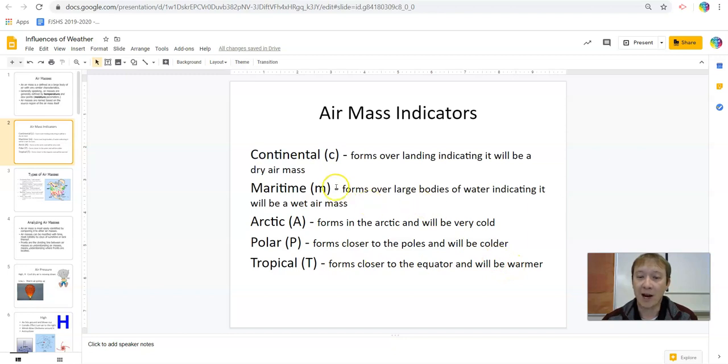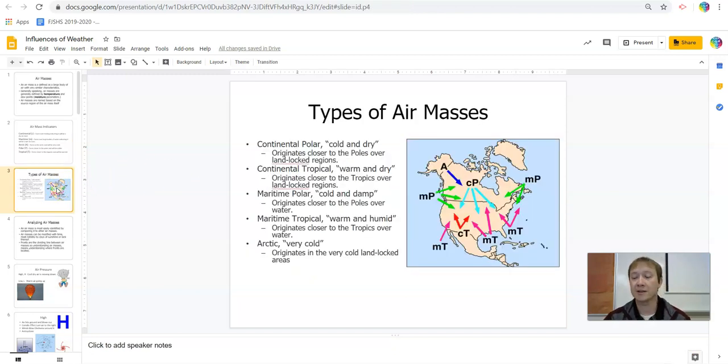So what we do is we can combine these using one of the two lowercase letters and one of the capitals to indicate where they come from. Looking at the most common air masses that affect the United States, you can see there are five main types here, and these are the same five types found throughout the world.